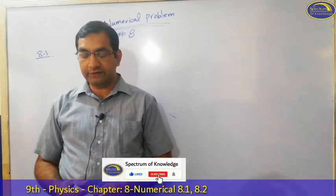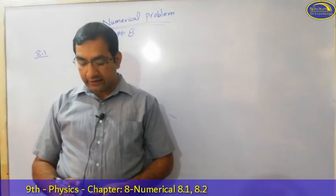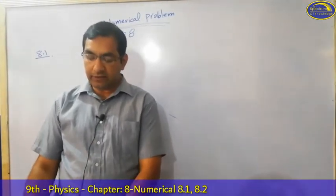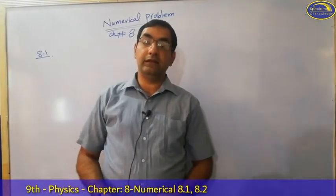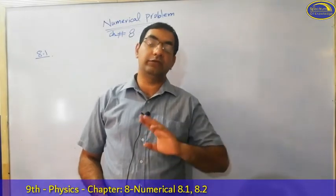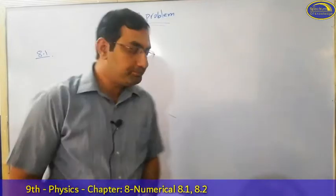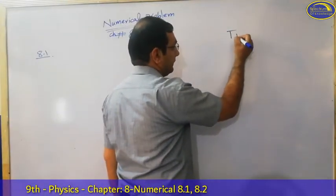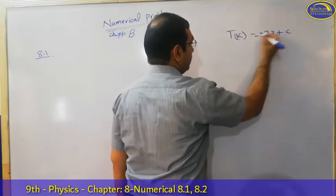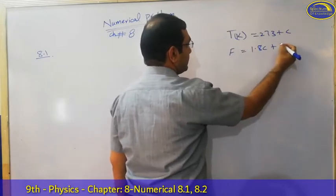Problem 8.1. Before I mention the formula, we have been discussing Celsius, Fahrenheit to Kelvin, and relations. The formula is: Kelvin equals 273 plus C. This is the formula of Fahrenheit: 1.8C plus 32 degree.